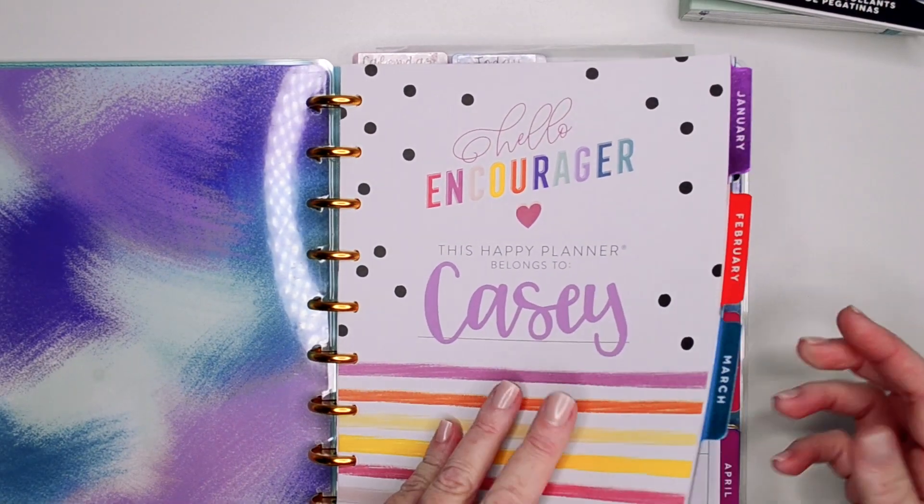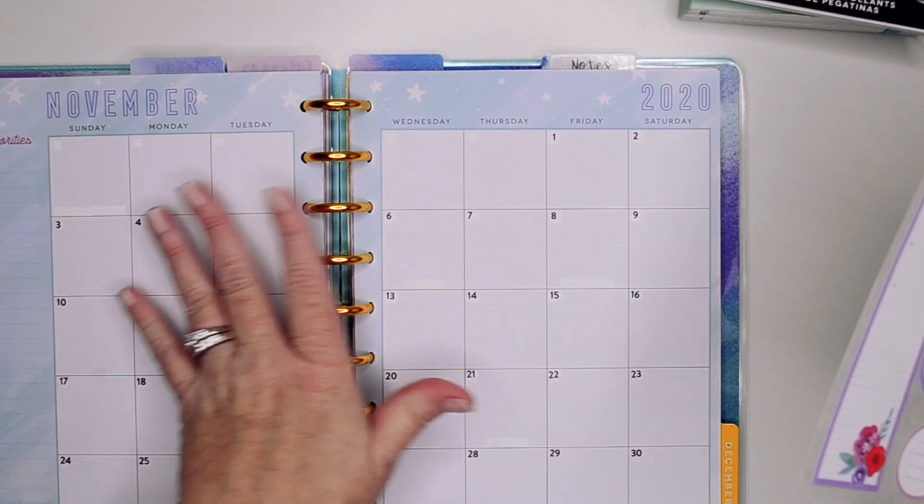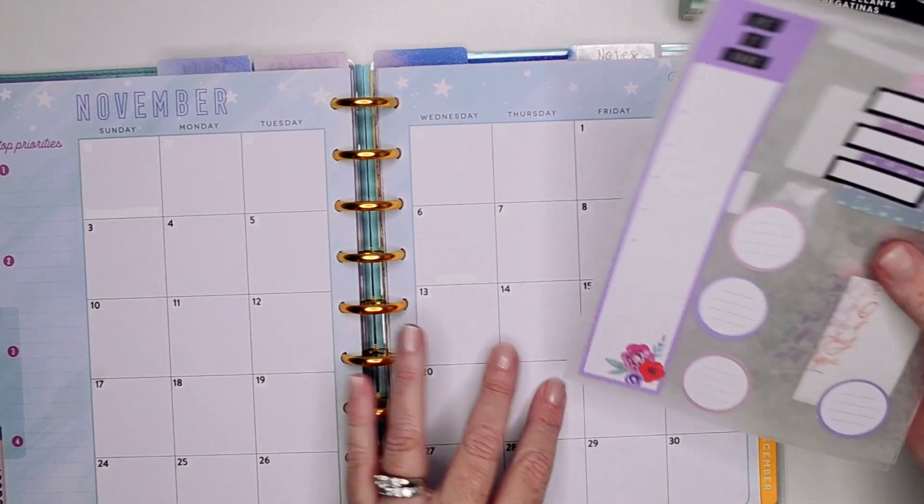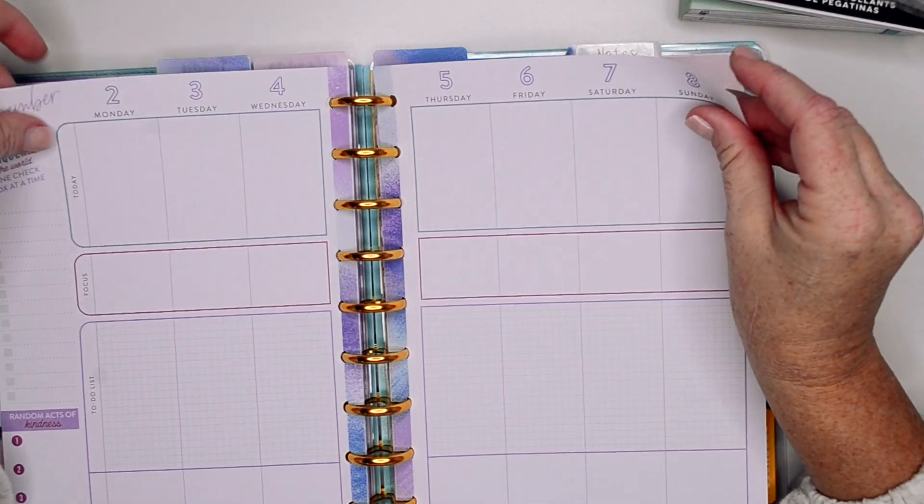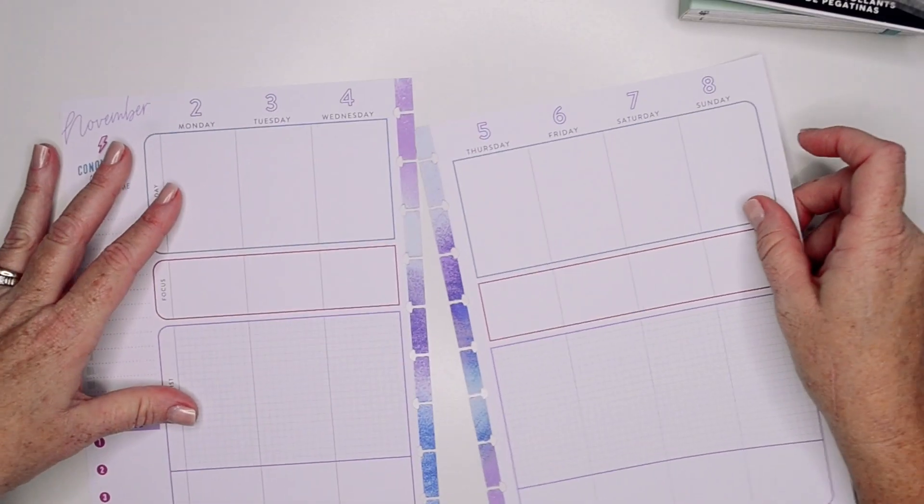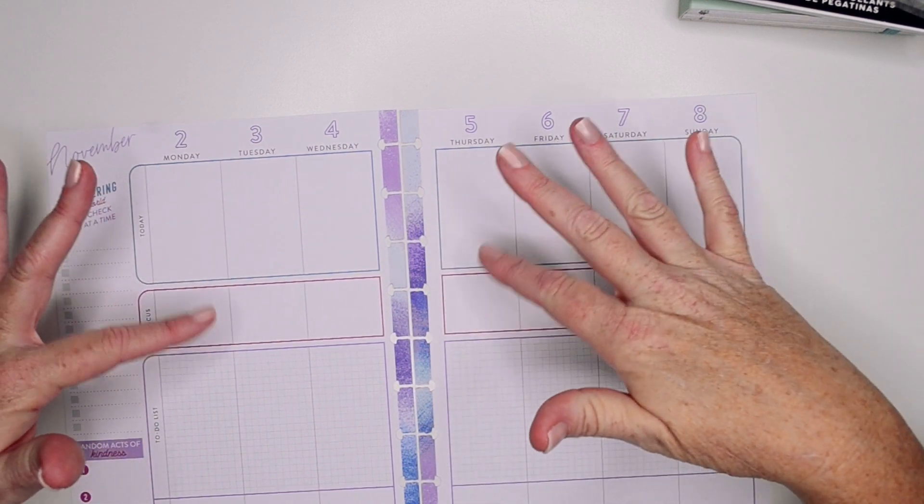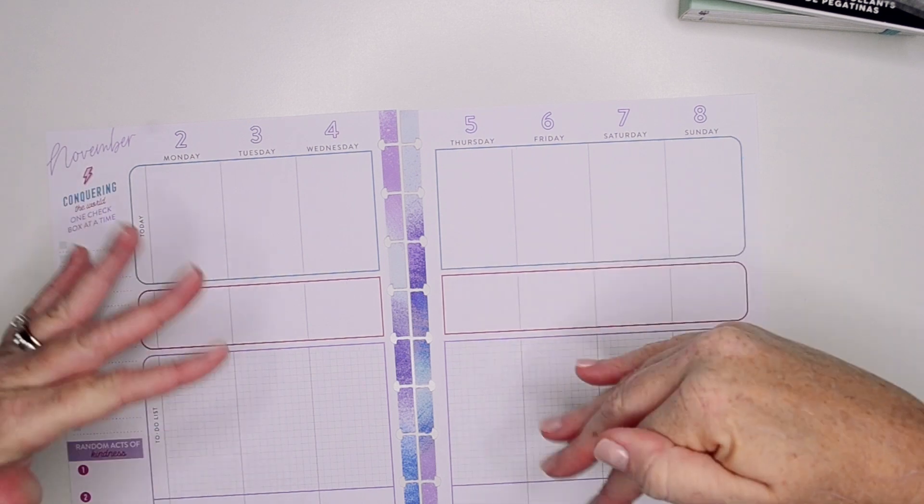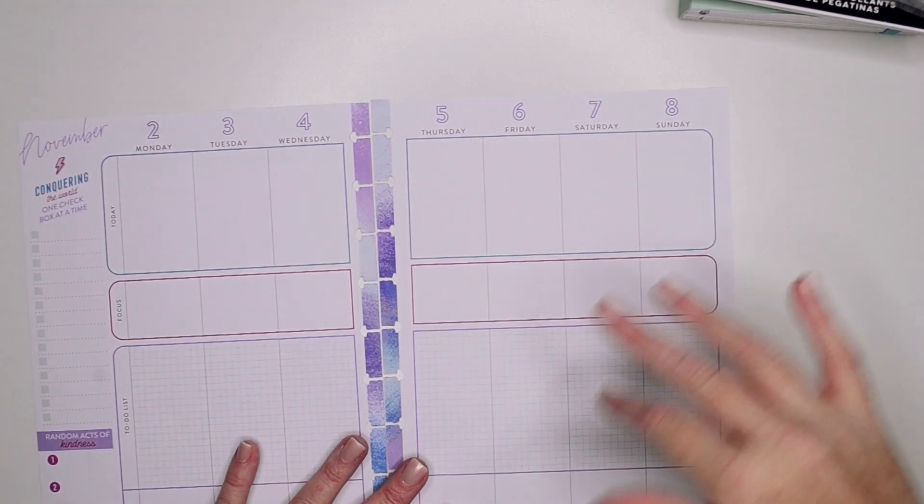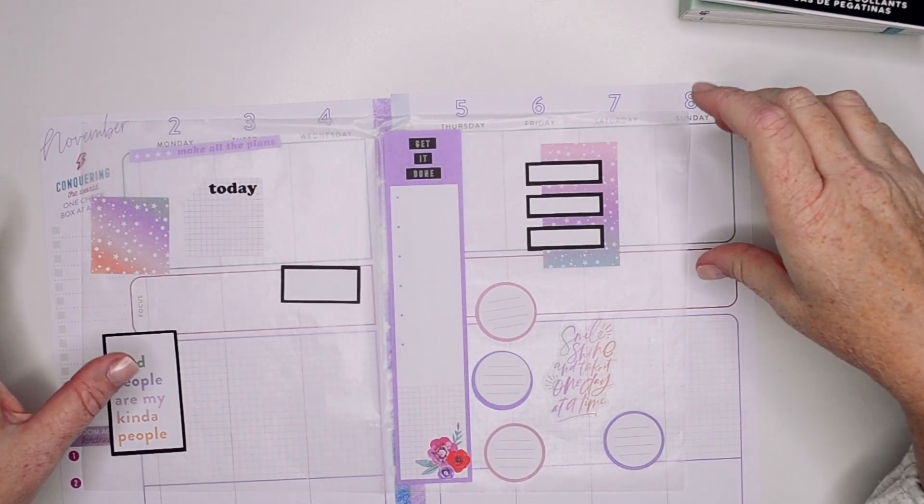So this will be our first full week in November and I did go ahead and redate my monthly calendar. I pre-chose some stickers already and the color scheme in the layout this week or for the month of November has changed from what it was in October. So we have these blues or teals, purples, just different shades of those colors. So I thought that the pastel mega sticker book colors would match pretty good with this spread.